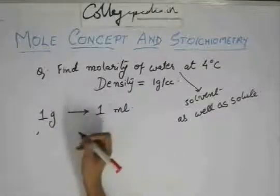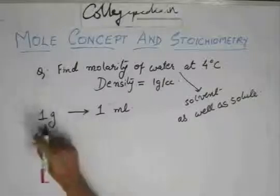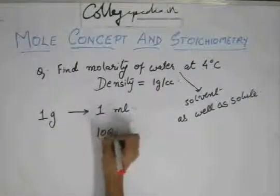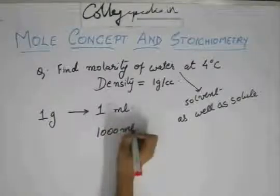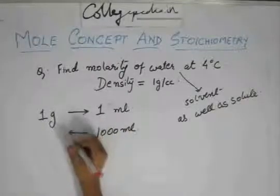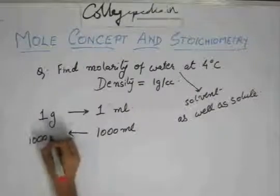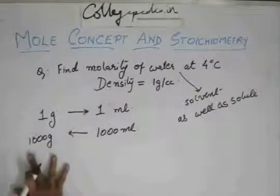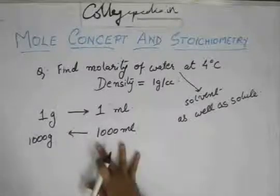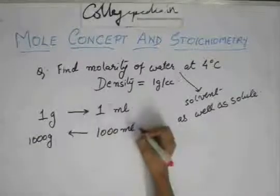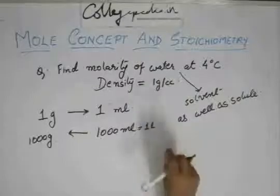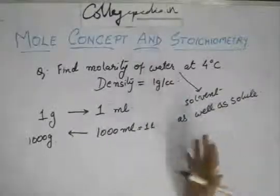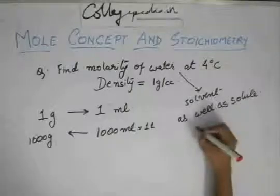So if you want to find the weight of water in 1000 milliliters, that is 1 liter, how much would it be? 1000 grams. So it's 1000 grams in 1000 milliliters, and this is 1 liter. So you have 1 liter of solution.